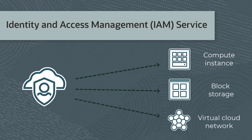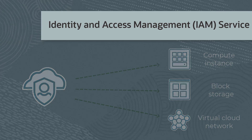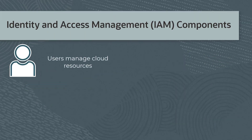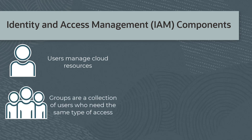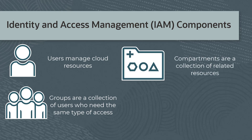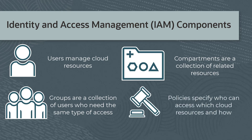With the IAM service, you can control what type of access a group of users have and to which specific resources. IAM components include users who manage your cloud resources. Groups are a collection of users who need the same type of access to a particular set of cloud resources or to a compartment. A compartment is a collection of related resources and is a fundamental component for organizing and isolating your cloud resources. A policy specifies who can access which cloud resources and how. Access to cloud resources is granted at the group and compartment level.